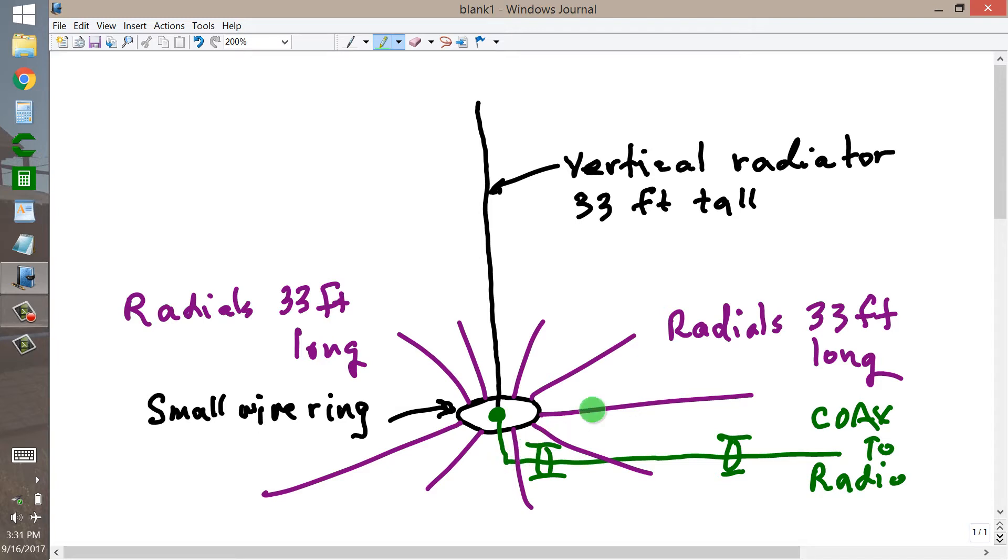But my viewer proposes to make an antenna like this for 40 meters, 7 megahertz, in which case the 33 feet represents one quarter of a wavelength. If you make these radials 33 feet long and as many as possible,